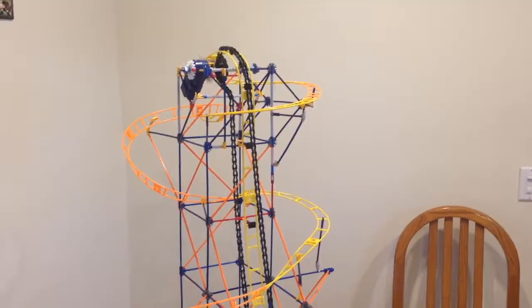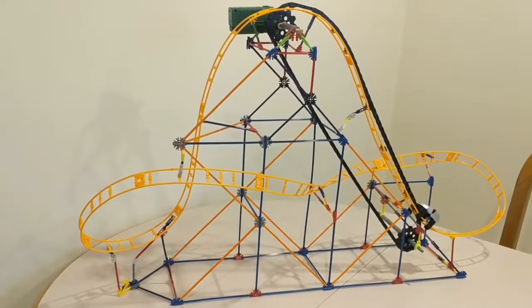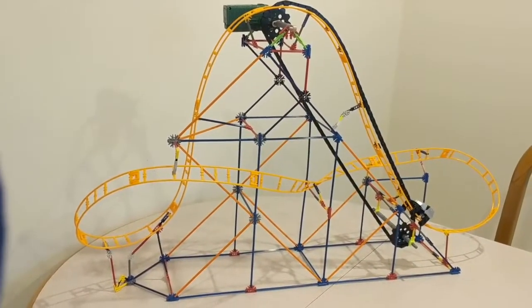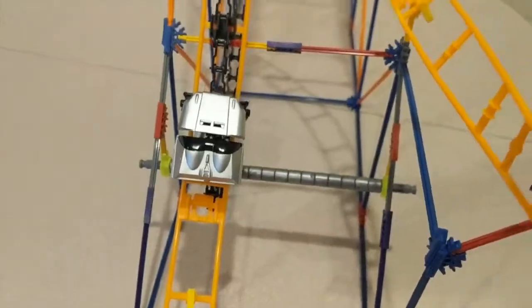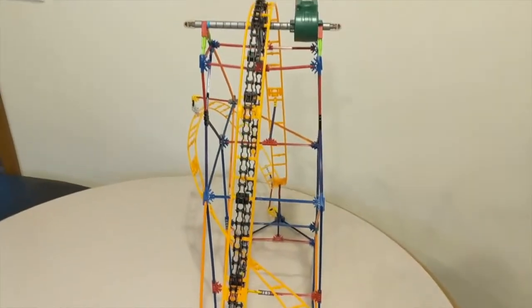K'nex makes all kinds of exciting roller coasters. Today I'm going to make this roller coaster called the Corkscrew Coaster. It stands almost two feet tall. It has more than 330 pieces. K'nex suggests it is for ages 7 and up.